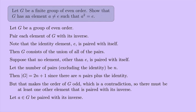So there must be at least one other element that is paired with its own inverse. Let A be that element. Then A equals its own inverse, which is the same as A² equals the identity E.